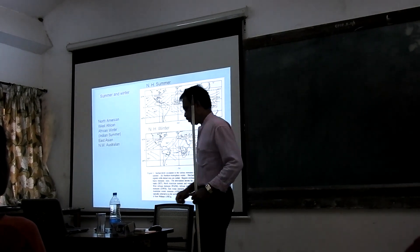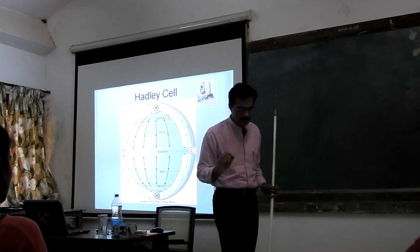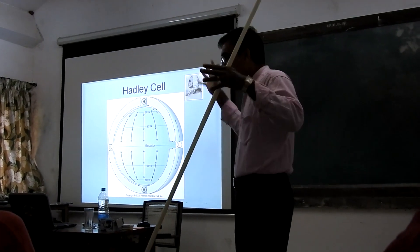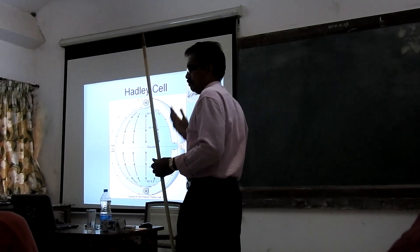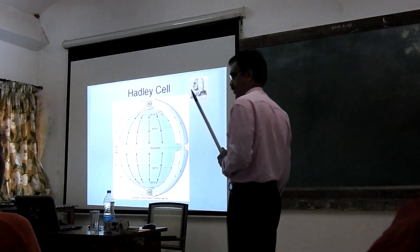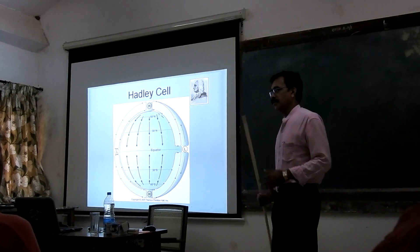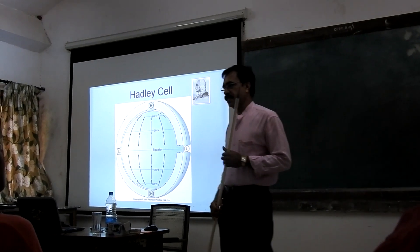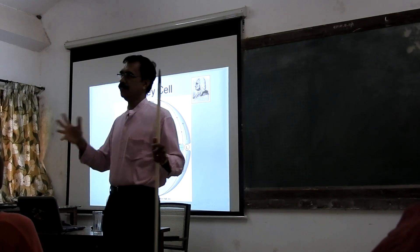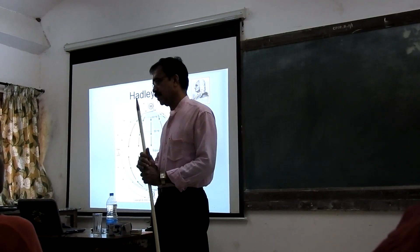When I say hemispheric circulation, I must draw your attention to the general circulation across the world. Let me try to explain that. This is the equator. Now the circulation says that the main source of energy for the circulation and water generation is the sun — solar radiation.